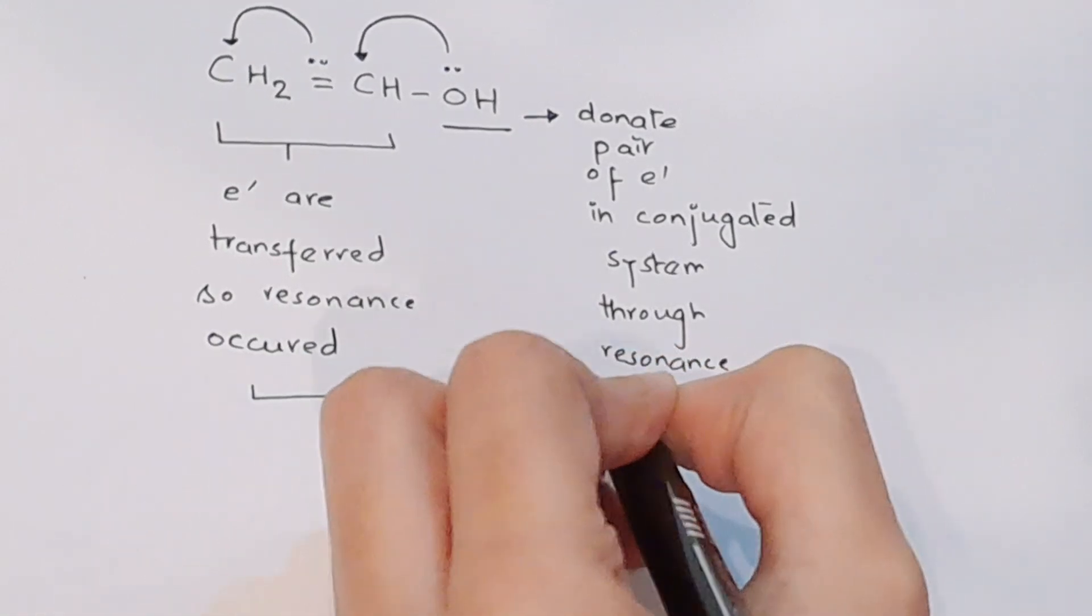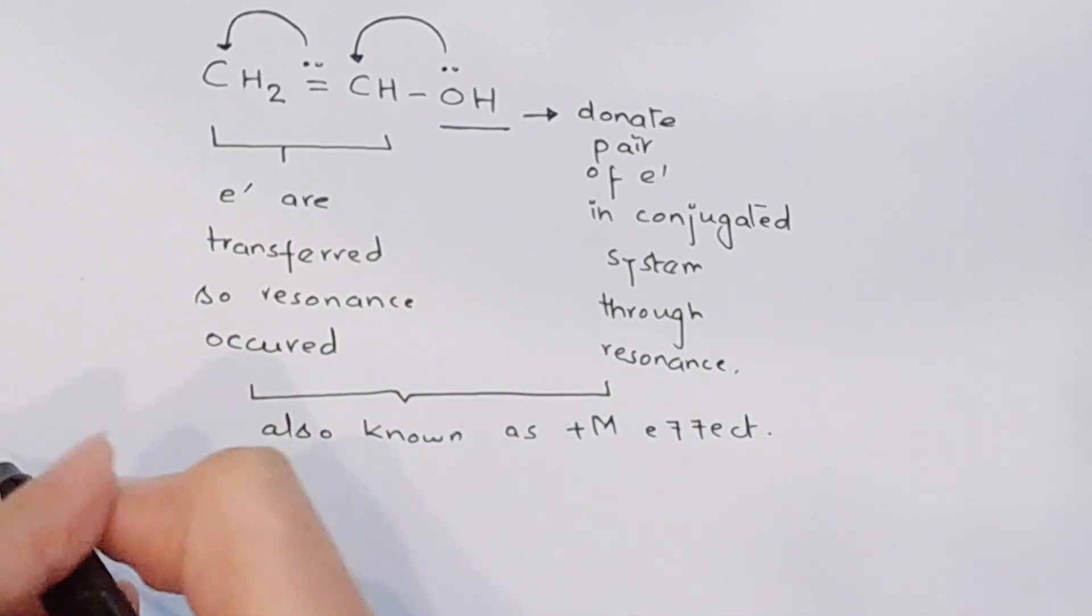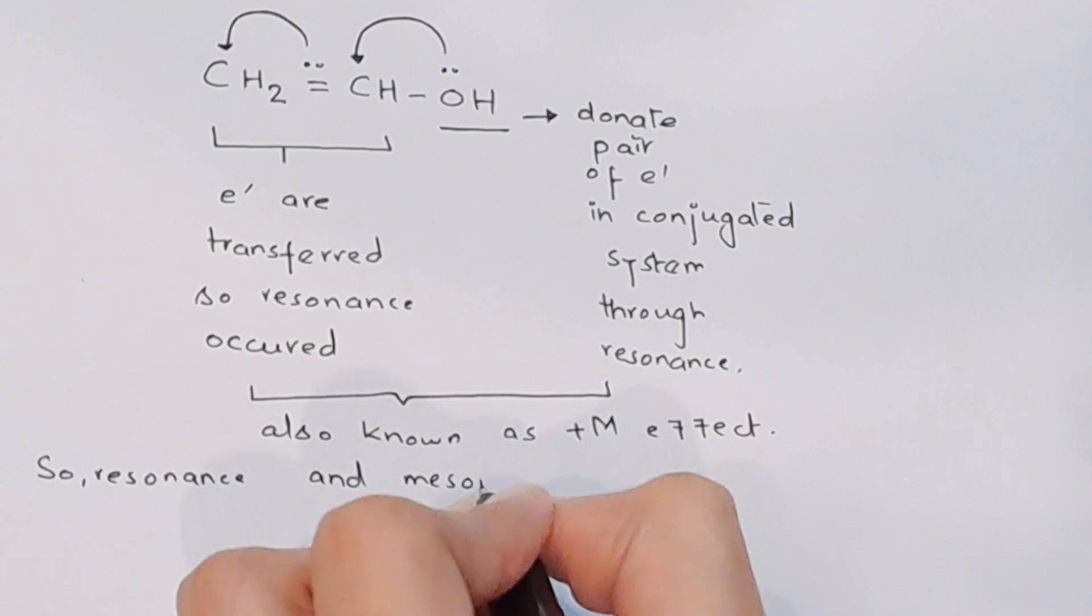Resonance occurred, so we can say that it is also known as positive M effect. Both resonance and mesomeric effect occurred in this compound.